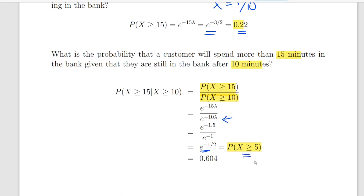And that also corresponds to what you would have got if you just used and invoked the memoryless property, probability x greater than or equal to 5. You would have got the same answer. So, both approaches are fine, but that gives you 0.604.